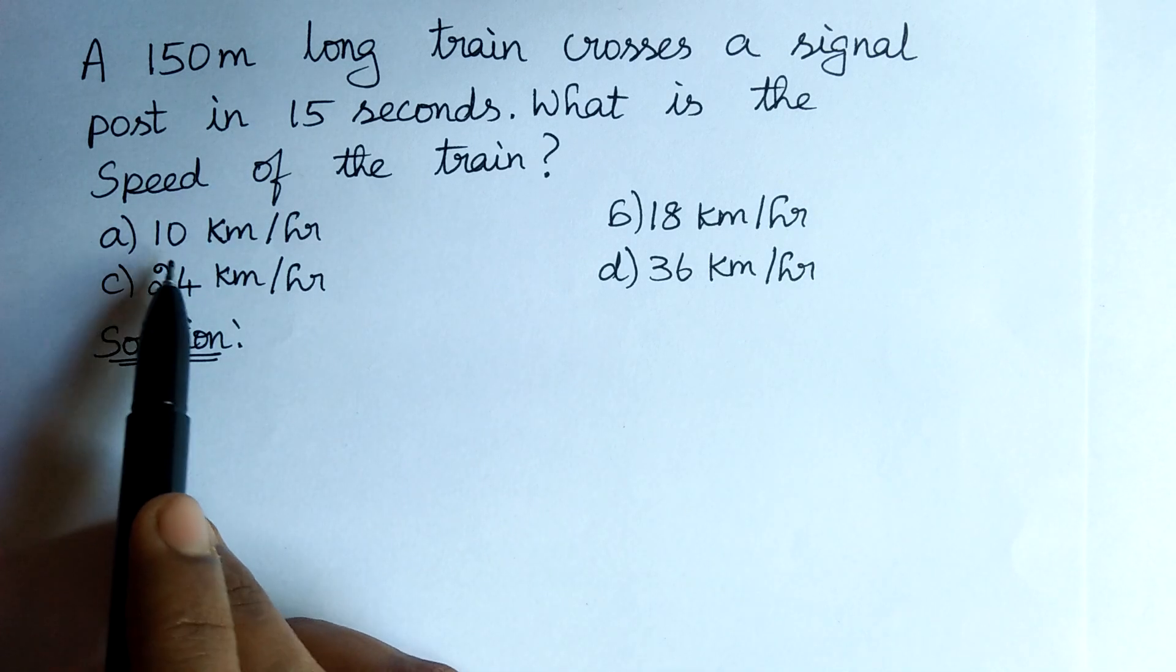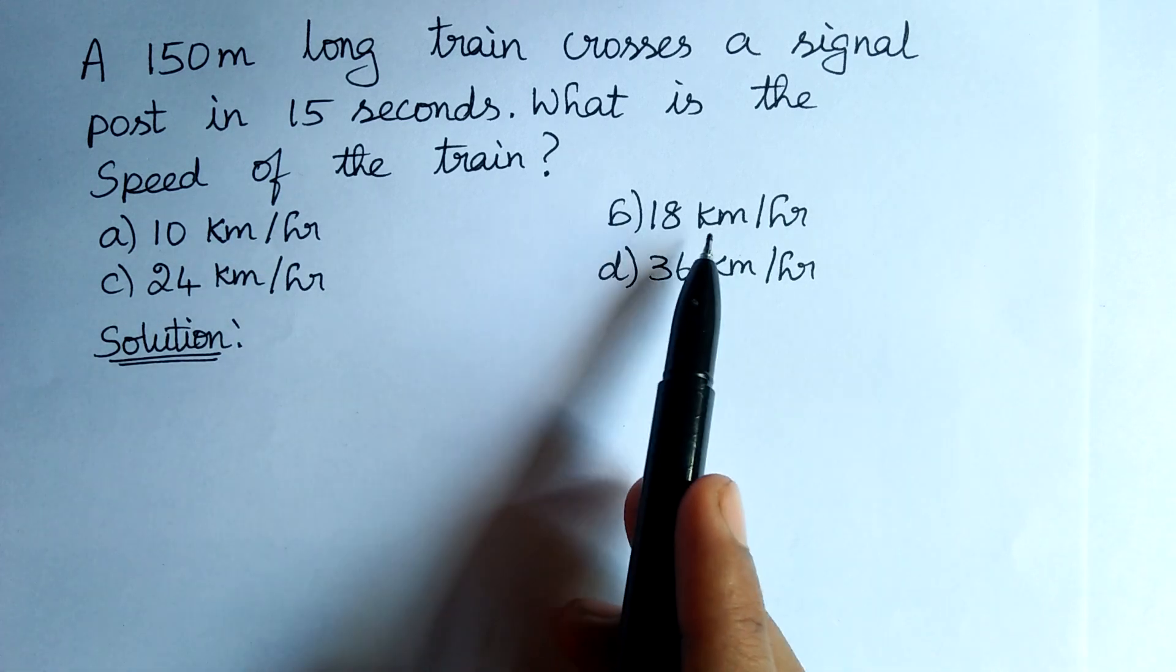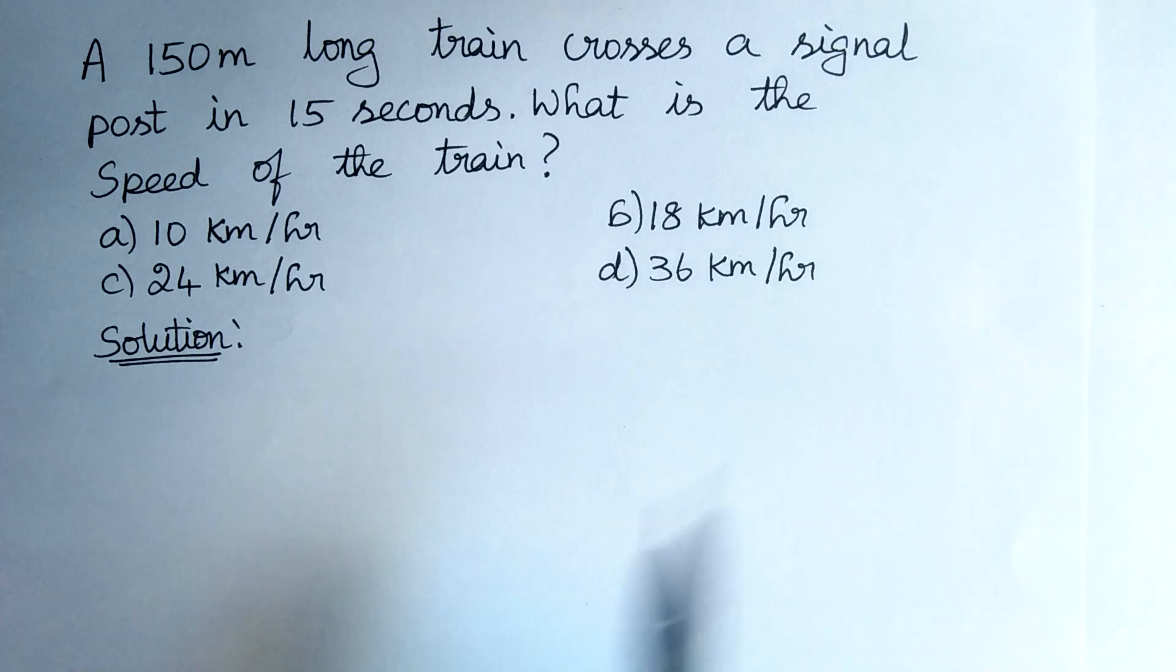The options are: a) 10 km per hour, b) 18 km per hour, c) 24 km per hour, d) 36 km per hour.